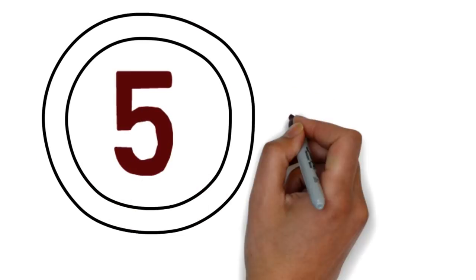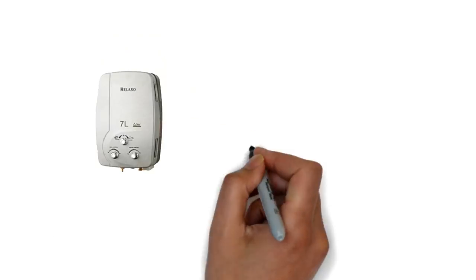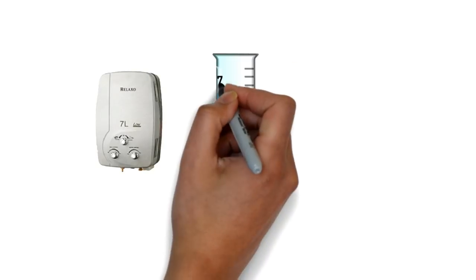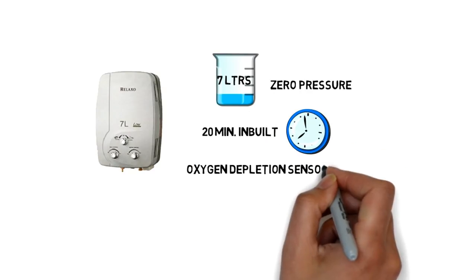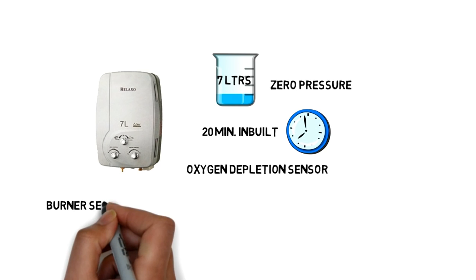Number 5: RELAXO 7-Litre Gas Geyser. RELAXO Gas Geyser has capacity of 7 liters with zero pressure. It also has 20-minute in-build timer and oxygen depletion sensor. It provides burner settings and dry heat protection.